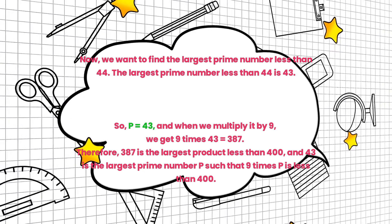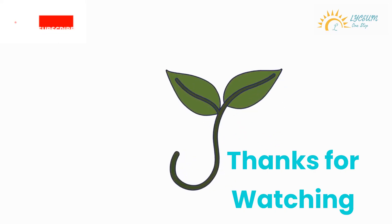Therefore, 387 is the largest product less than 400, and 43 is the largest prime number P such that 9 times P is less than 400.